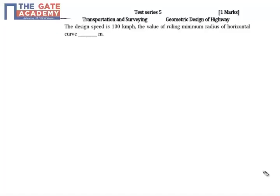This question is from transportation and surveying, from the topic geometric design of highways. In this question, the design speed of 100 km/h is given, and the value of the ruling minimum radius of horizontal curve is asked.